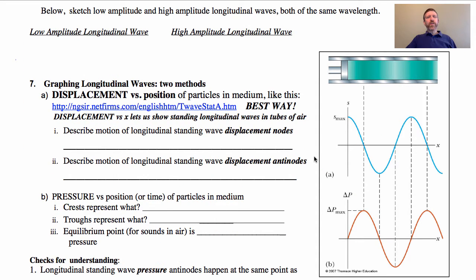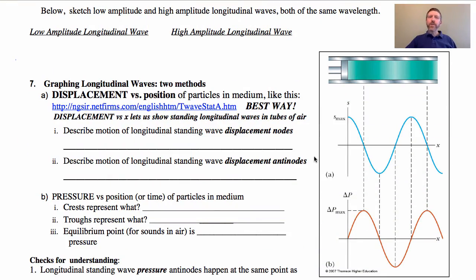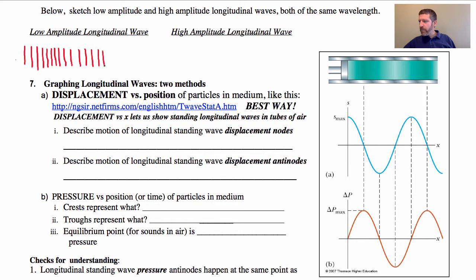Now we're going to sketch a low amplitude and high amplitude longitudinal wave, both of the same wavelength. With a transverse wave it's very easy to change the amplitude — a low amplitude transverse wave looks like this, and a high amplitude transverse wave is taller. It's a little more tricky for a longitudinal wave. I'm going to draw a side view of a slinky: here's the equilibrium position where the coils are this far apart. With a compression they'd be a bit closer together, and a rarefaction would be a bit farther apart.